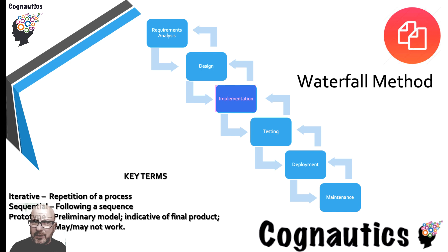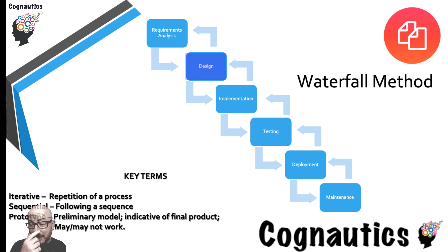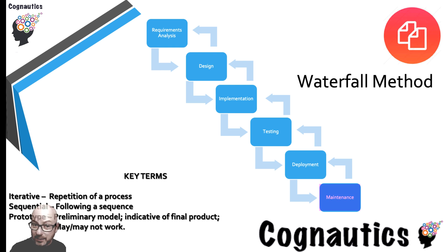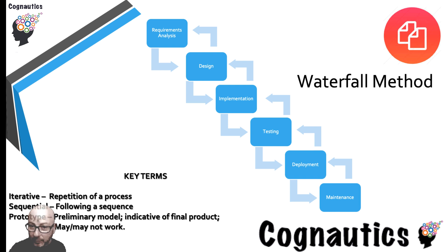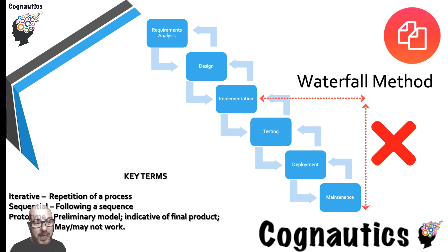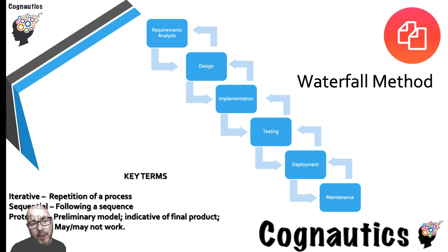Let's say the design stage works well, but then at the implementation stage you run into problems — perhaps the software you wanted to use can't do what's needed and costs start to spiral out of control. In that case you'd go back to the design phase and make changes, which might also involve going back up to requirements analysis. From there you'd go back down: design, implementation, testing, deployment, maintenance. The rule is you can go back up as many steps as you like, but coming back down you cannot miss any stages.